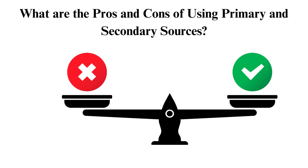When should you use primary and secondary sources? As a student, you need primary and secondary sources when conducting research. You should use primary sources like audio recordings to relate to past events and understand the history of the events. Primary sources are essential in historical events and when seeking direct evidence.